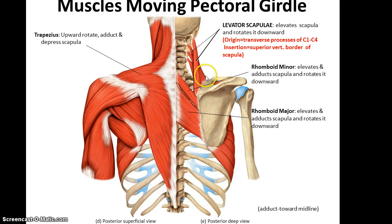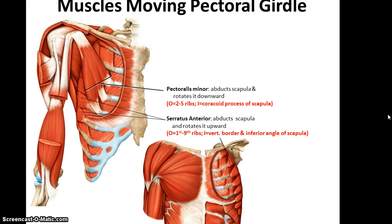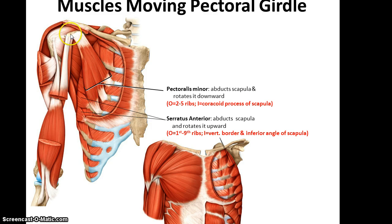We also have the levator scapulae, which elevates the scapula and rotates it downward. Its origin is located on the first four cervical vertebrae, specifically their transverse processes, and the insertion is the superior vertebral border of the scapula. Next we have the pectoralis minor, which is deep to the pectoralis major, and it abducts the scapula and rotates it downward. Its origin is ribs two through five, and its insertion is the coracoid process of the scapula.